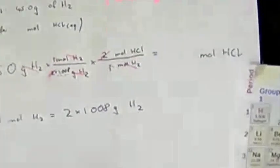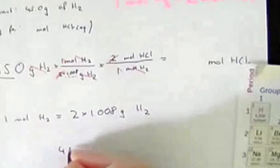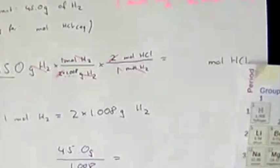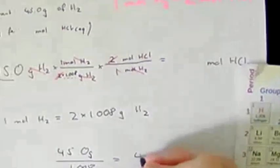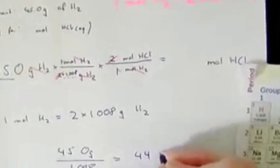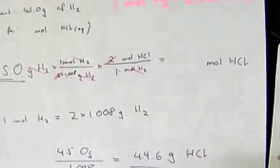And what I get is that I can calculate my answer as 45 grams divided by 1.008. So 45 divided by 1.008 is 44.6 moles of HCl.